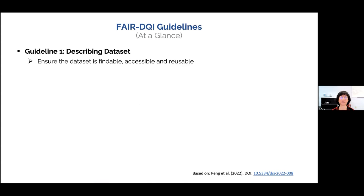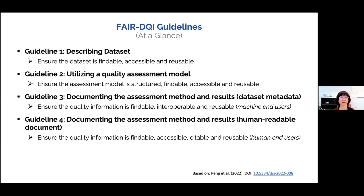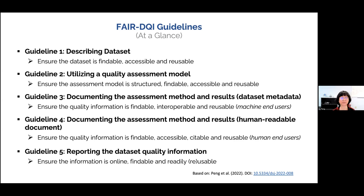There are a total of five guidelines. Guideline one is about describing a dataset to ensure it is findable, accessible, and usable. Guideline two is about utilizing a quality assessment model and ensuring that model is structured, findable, accessible, and usable. Guidelines three and four are about documenting relevant information in machine-actionable format as well as human-readable format. Guideline five is about reporting or disseminating dataset quality information online to ensure the information is findable and readily reusable.